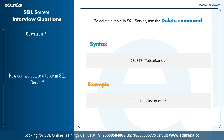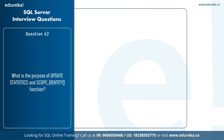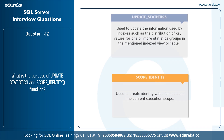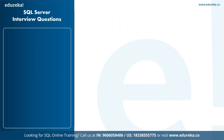The next question is: what is the purpose of UPDATE STATISTICS and SCOPE_IDENTITY? The UPDATE STATISTICS function updates information used by indexes, such as the distribution of key values for one or more statistics groups in an index view or table. The SCOPE_IDENTITY function is used to return identity values for tables in the current execution scope.